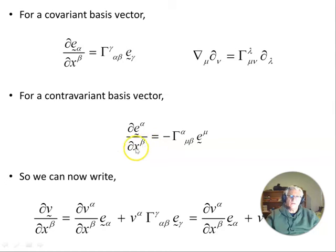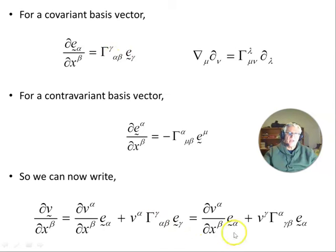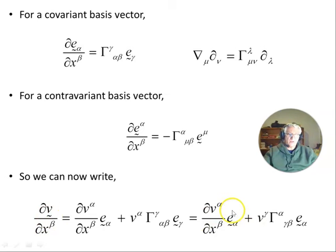So the partial derivative of our vector V includes the partial derivative of the basis vectors expressed via Christoffel symbols. Substituting this in, and collecting terms with a common basis vector — swapping the dummy indices α and γ — we arrive at the covariant derivative of our vector in terms of both the derivative of its components and the derivative of the basis vectors, combined under a common basis vector.